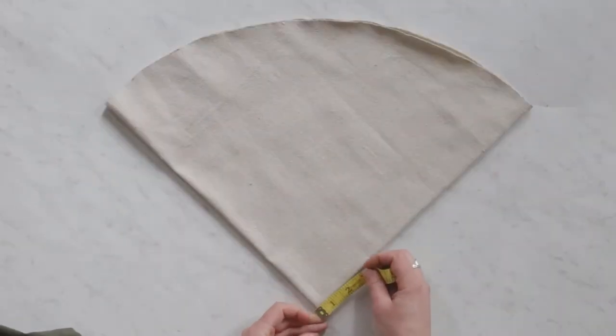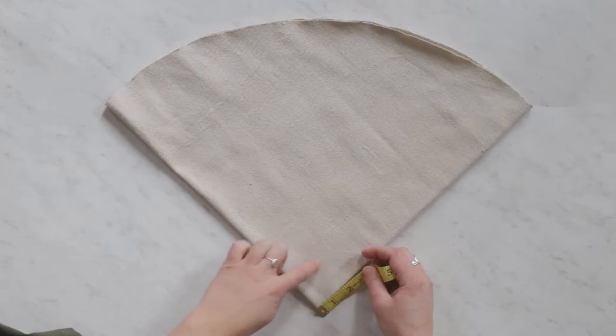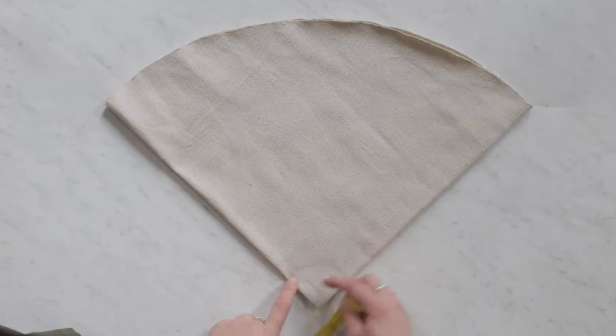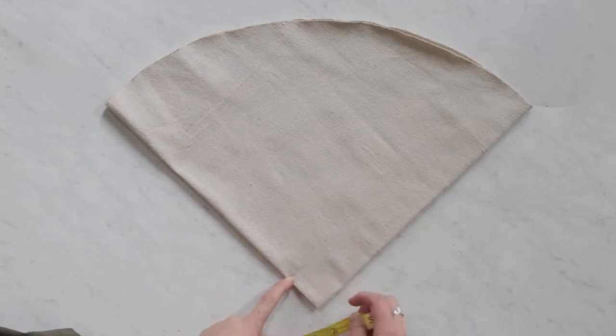Now I'm going to do the same thing and repeat it for a circle in the center. So I'm just going to measure in two inches and create a little circle and then cut this out. This will be where the tree comes through.